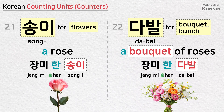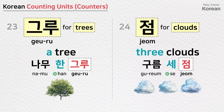송이 is a counting unit for flowers: a rose — 장미 한 송이. 다발 is a counting unit for a bouquet or bunch of flowers: a bouquet of roses — 장미 한 다발. 그루 is a counting unit for trees: a tree — 나무 한 그루. 점 is a counting unit for clouds: three clouds — 구름 세 점.